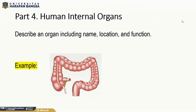Part 4: Human internal organs. Describe an organ including name, location, and function. Example: This is the large intestine. It is located between the stomach and the anus. It receives undigested food from the small intestine, absorbs water, and expels the waste.